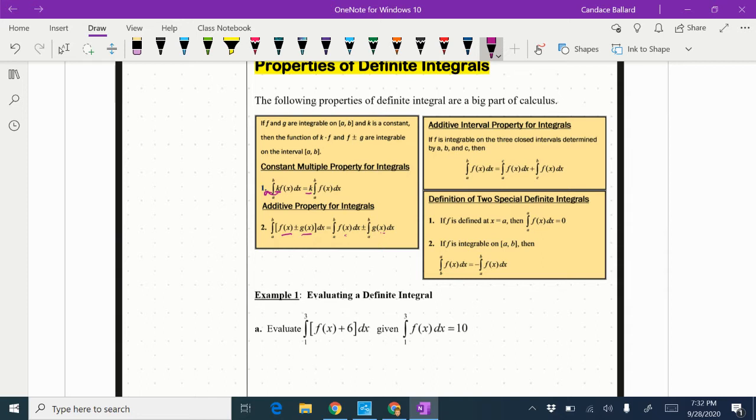The additive interval property says that if I have an interval and I need to split it up to another interval I can do that and split the function up into two different intervals and integrate it in two separate intervals.